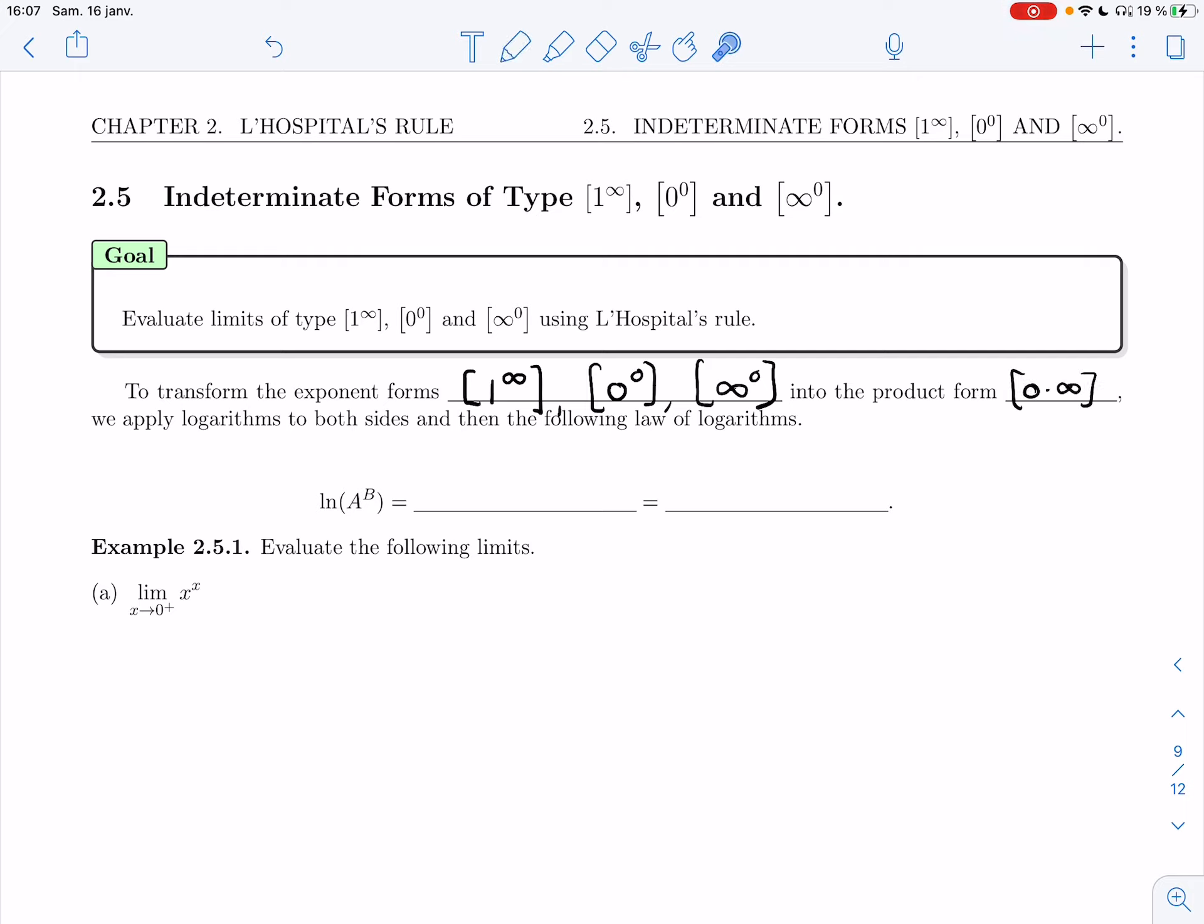We're going to do that by applying logarithms to both sides and then the following laws of logarithm. So I'm going to take ln of A to the B. That's going to turn into ln of A. And then the B, I like to think of the B as being on his friend's shoulder and escaping the log jail. So it's going to jump out in front and I'm going to get B ln of A.